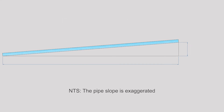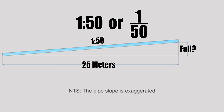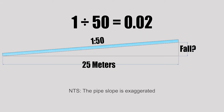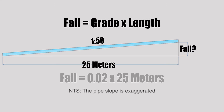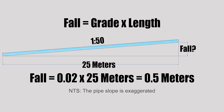Now let's move on to two examples using ratio grade. I have a 25-meter-long pipe graded at 1 in 50, and I want to find the total fall. Ratio grade can be expressed as the ratio 1 in 50 or the fraction 1 over 50. To turn it into a usable decimal, we take 1 divided by 50, which gives us 0.02. Plugging into the formula — fall equals 0.02 times 25 meters — we get a total fall of 0.5 meters.